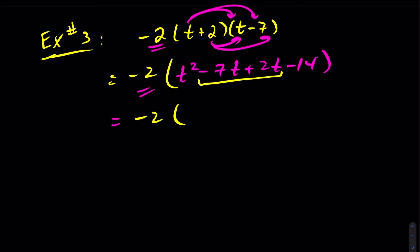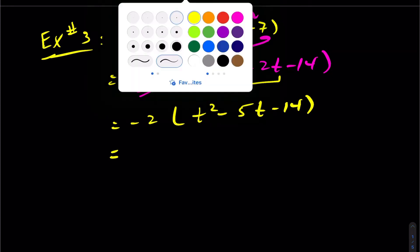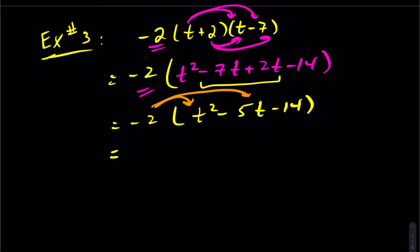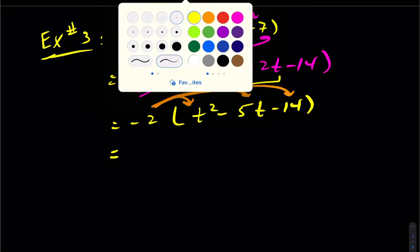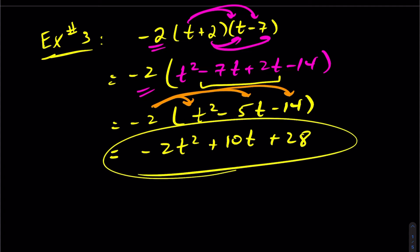By simplifying those two like terms you've reduced your calculation, giving us t squared minus 5t minus 14. Now I've simplified fully inside the brackets, so now I distribute the negative 2. That's going to go to all three terms, and when we distribute we end up getting minus 2t squared plus 10t — notice the two minus signs — plus 28. Now it's fully simplified.